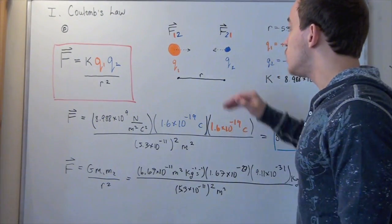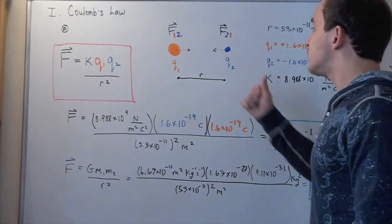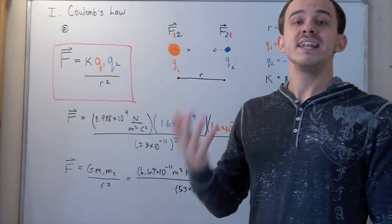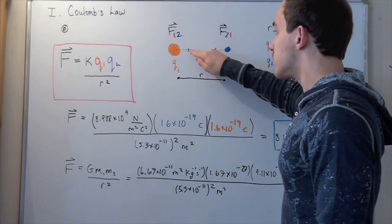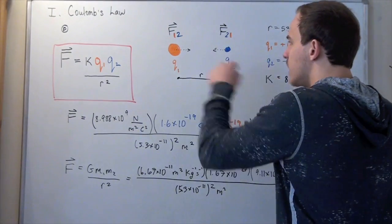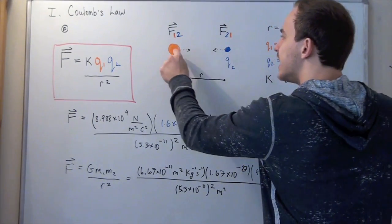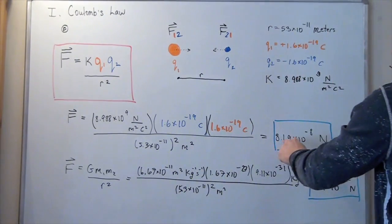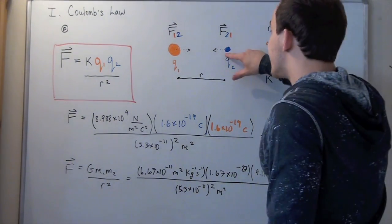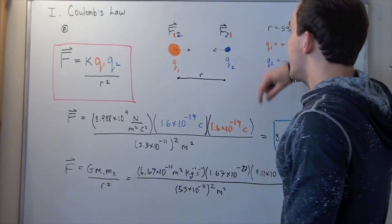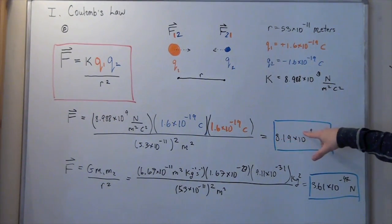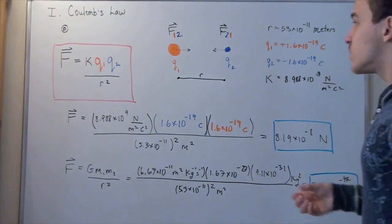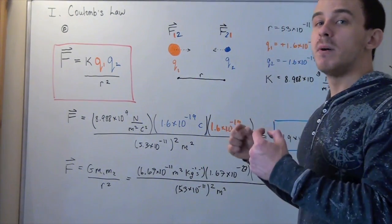The force on the proton due to the electron is 8.19 times 10 to the negative 8 Newtons. The force on the electron due to the proton has the same magnitude but opposite direction: negative 8.19 times 10 to the negative 8 Newtons. So these forces are always equal in magnitude but opposite in direction.